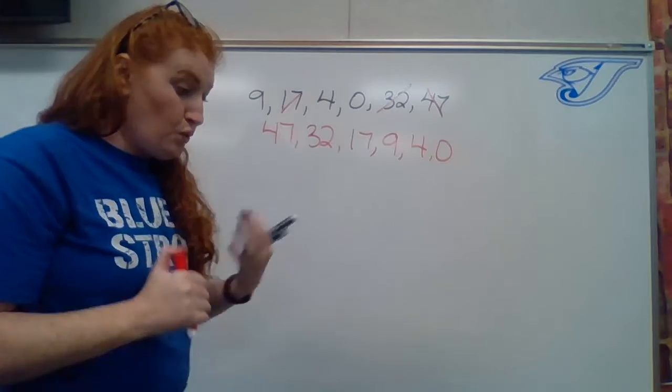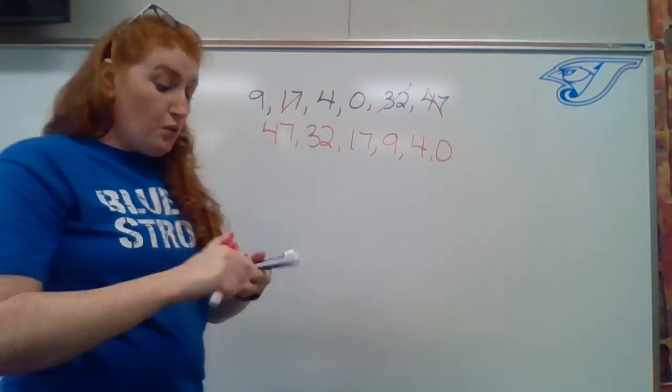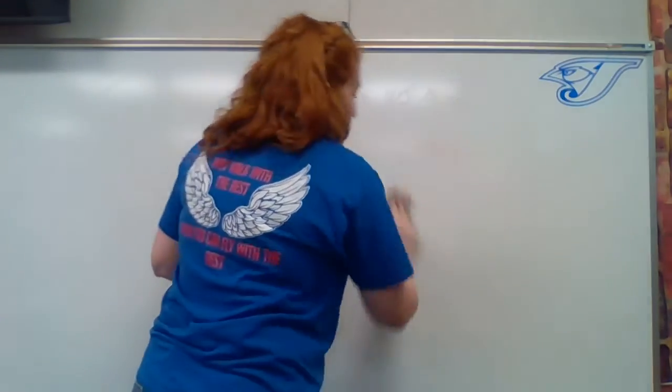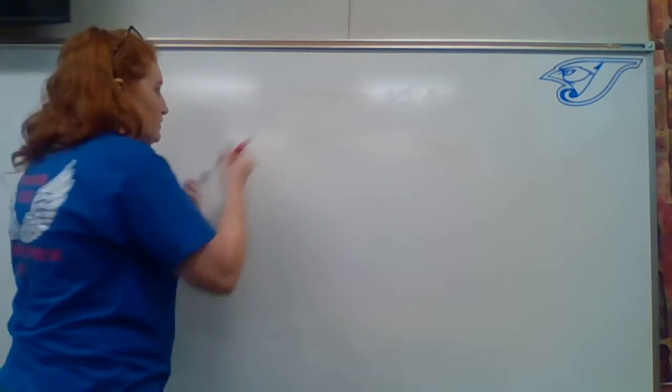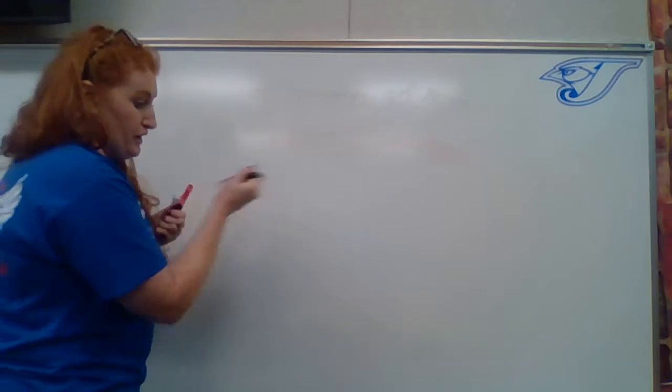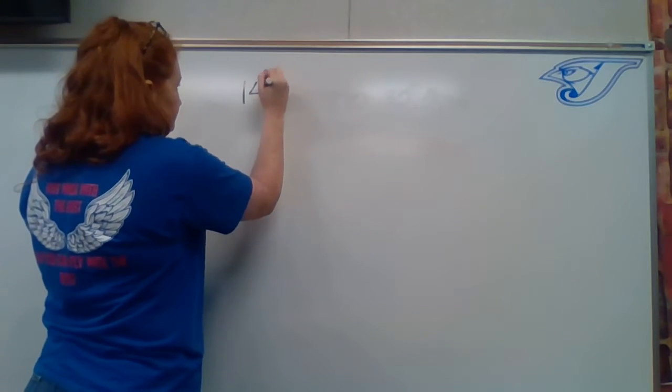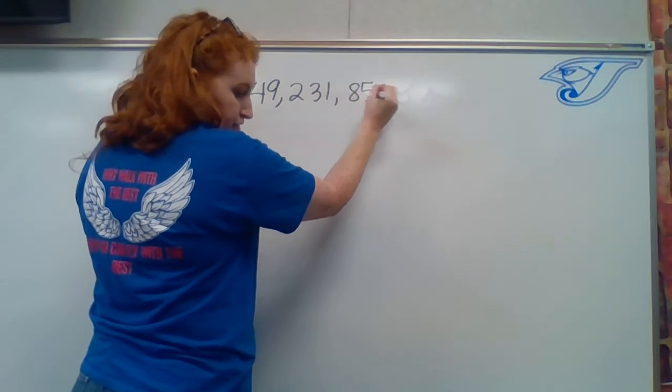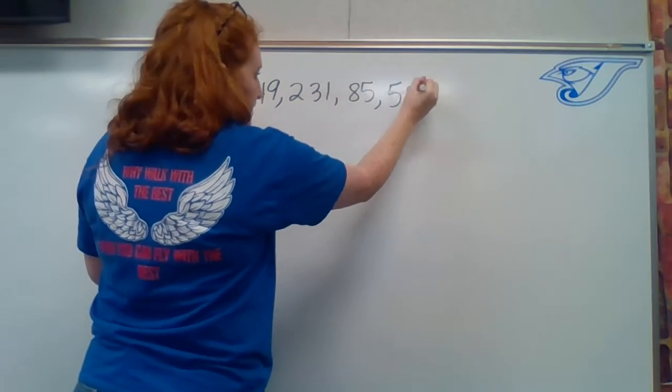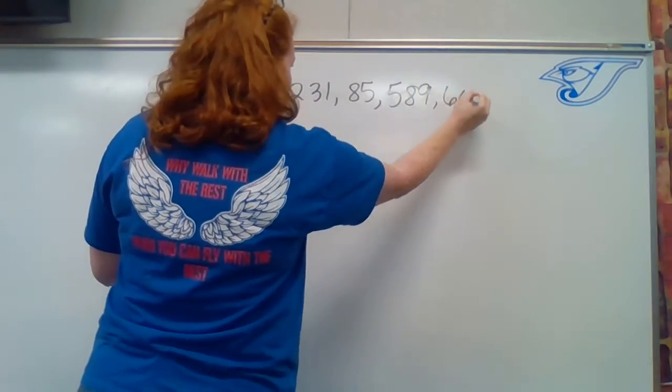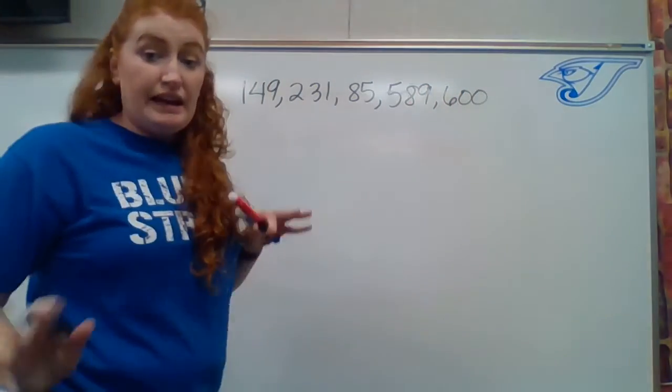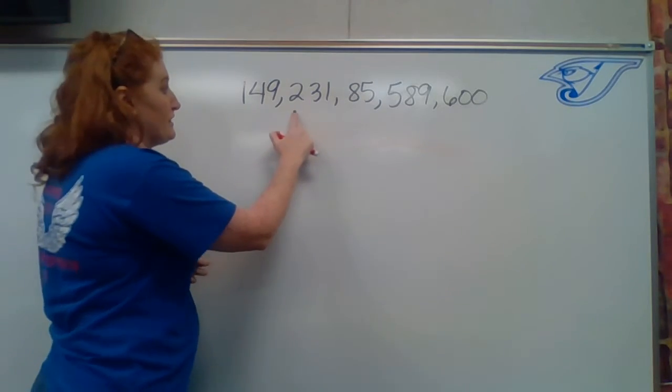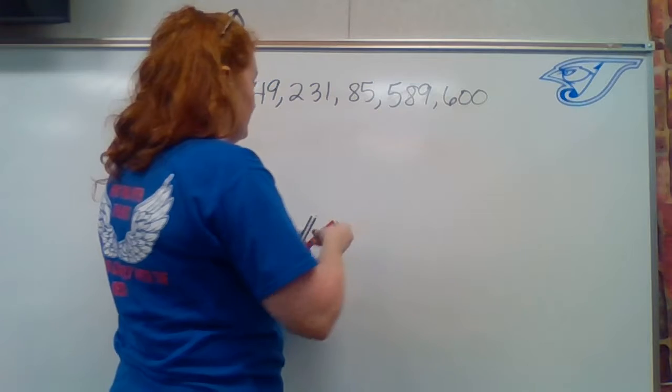Again, we will need to do our same thing when the numbers are bigger. So I'm going to use the same numbers as last time. They were 149, 231, 85, 589, and 600. So there are numbers in a random order. So if we're starting with the largest number, we have to go through and we have to find the number that is biggest. There we go, 600.